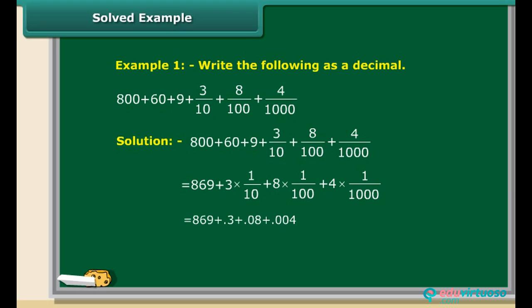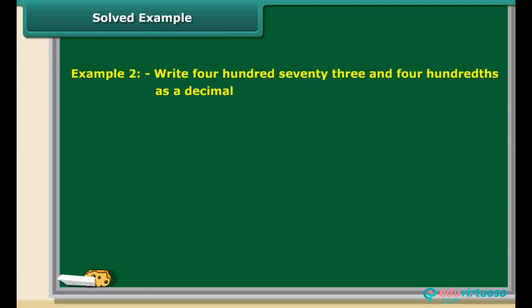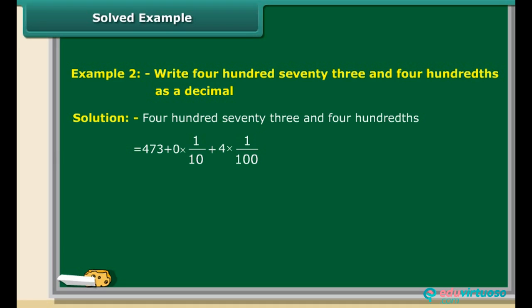Let us solve one more question. Write 473 and 4 hundredths as a decimal. In this number, 473 is the whole part. The decimal part is 4 hundredths, which can be written as 0.04. So the number is 473.04.